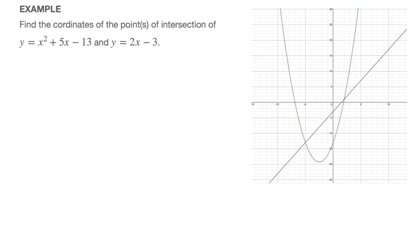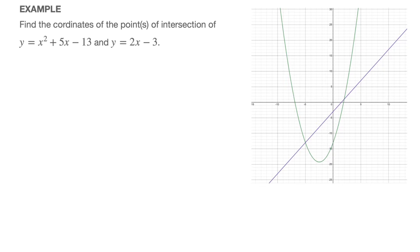In this example, we see how to find the coordinates of the points of intersection between a parabola and a straight line graph. We'll work through the example: find the coordinates of the points of intersection of y equals x squared plus 5x minus 13, and y equals 2x minus 3, which is the line.